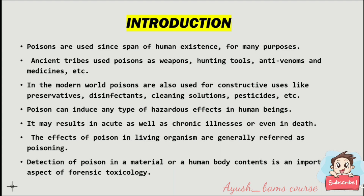First, we will go with the introduction. Poisons have been used since the span of human existence for many purposes. Ancient tribes used poisons as weapons, hunting tools, anti-venoms, and medicines. In the modern world, poisons are also used for constructive uses like preservatives, disinfectants, cleaning solutions, and pesticides. Poison can induce any type of hazardous effect in human beings — it may result in acute as well as chronic illness, or even death. The effects of poison in living organisms are generally referred to as poisoning.